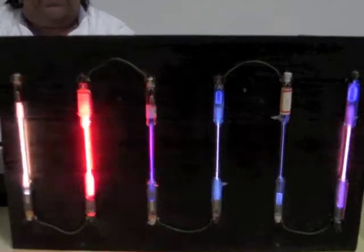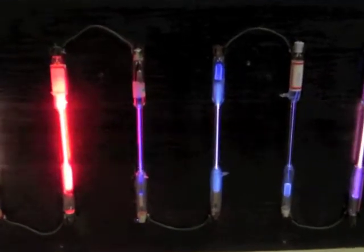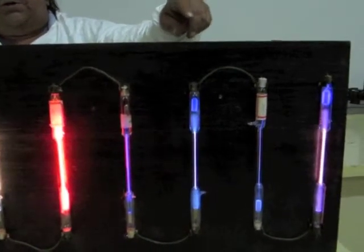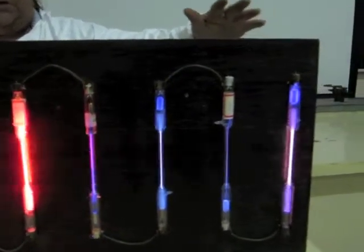Now you can see the different colors produced. The first one is helium, the second is neon, then we have argon, krypton, and xenon. And at the end, we have hydrogen gas.